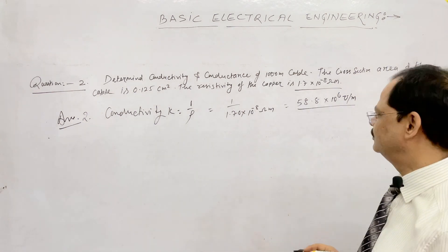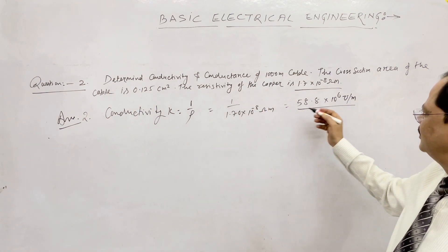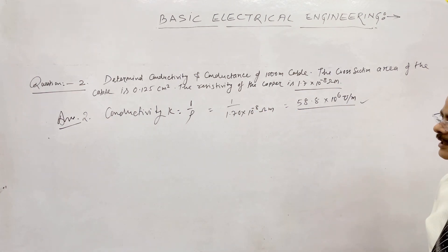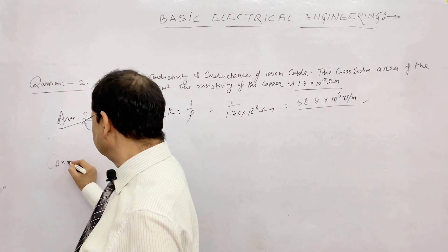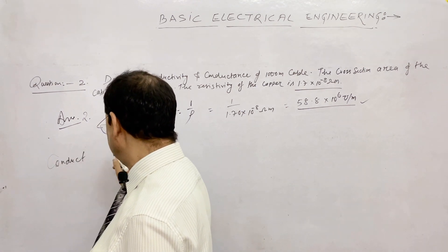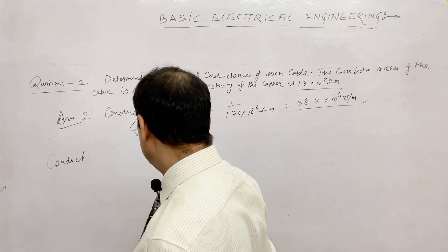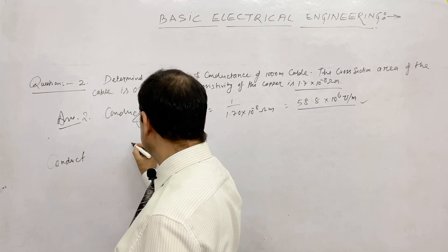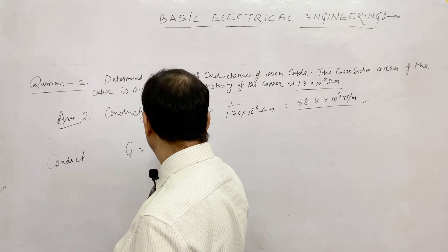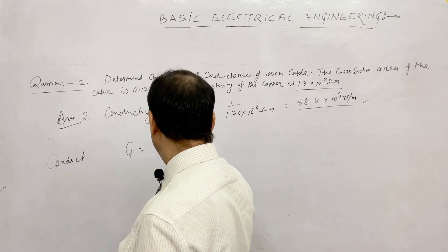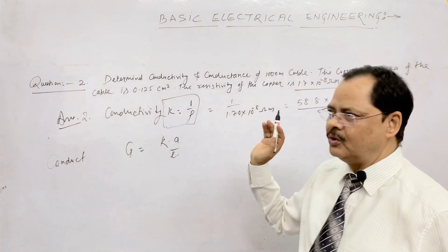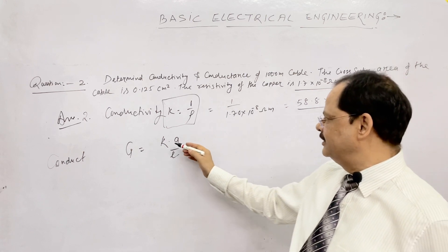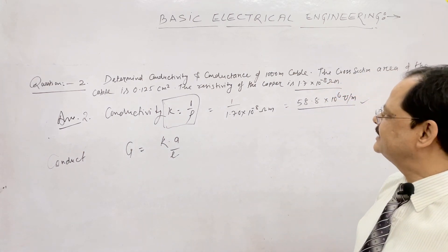So conductivity k = 58.8 × 10⁶ mho per meter. Now for conductance G, the formula is G = k × A / L, where k is conductivity, A is the cross-section area, and L is the length.